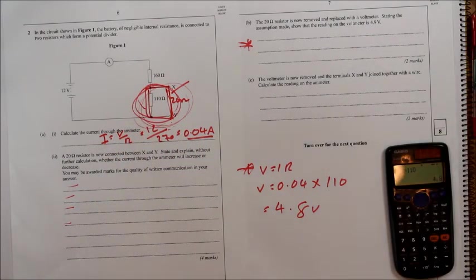Okay, the voltmeter is now removed and the terminals X and Y are joined together with the wire. Calculate the reading on the ammeter.